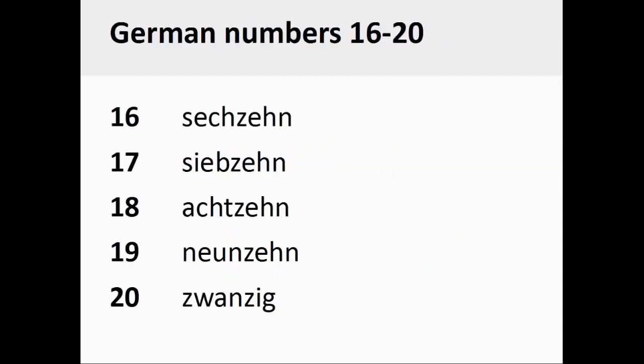The German numbers 16 through 20 are pronounced sechzehn, siebzehn, achtzehn, neunzehn, zwanzig. Again, this is very similar to English.